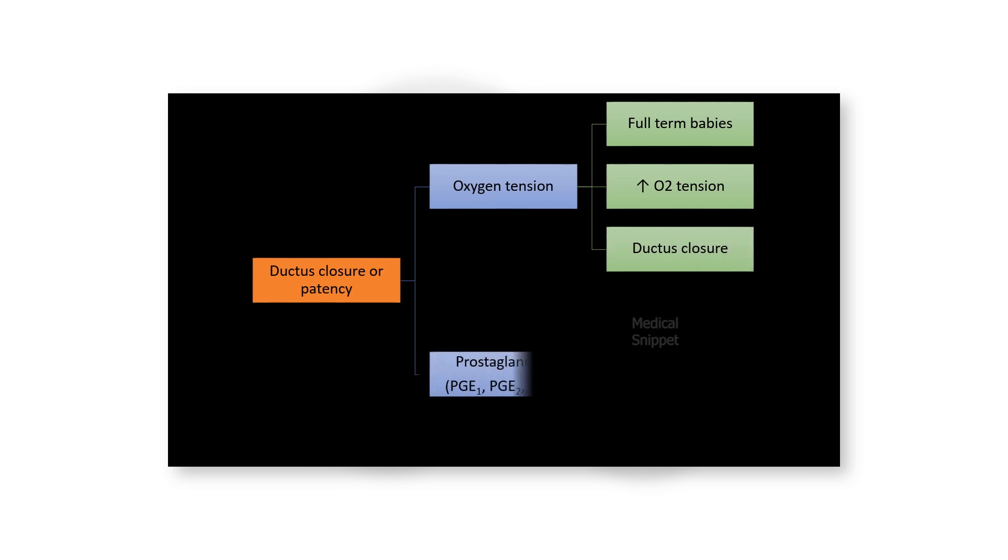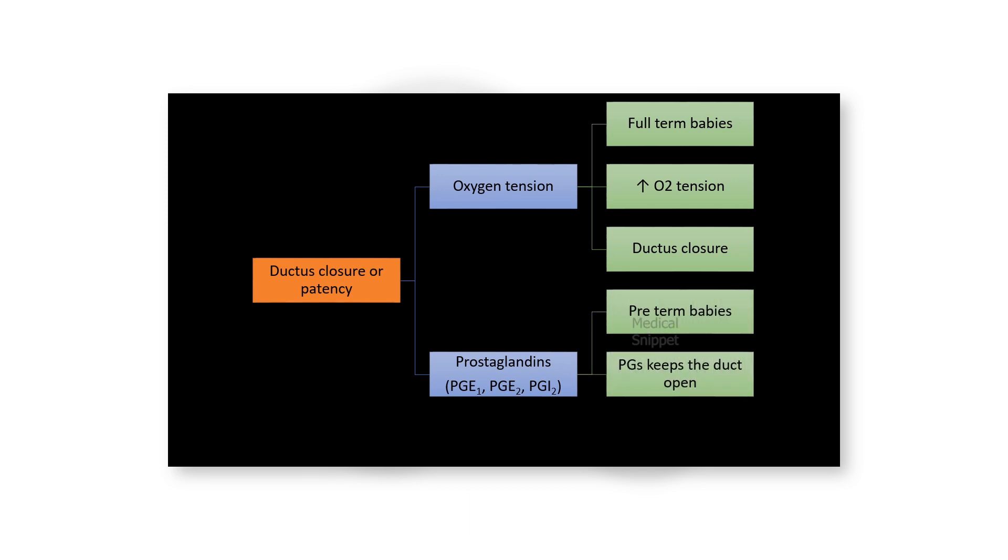Prostaglandins are more sensitive in preterm babies. They relax the ductus, thus keeping the duct patent. Non-steroidal anti-inflammatory drugs like indomethacin inhibit prostaglandin synthesis. Thus these drugs help in closure of the ductus, especially in preterm infants.